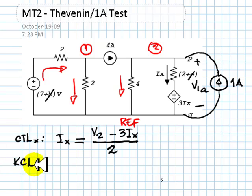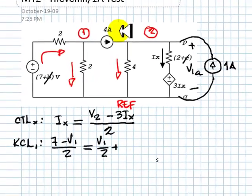KCL for node number 1, currents that go in, 7 minus V1 over 2, currents that go out, V1 over 2, and 4 amps.